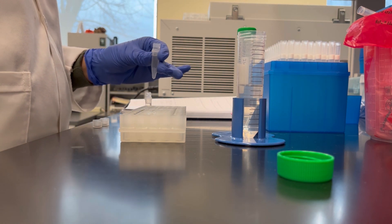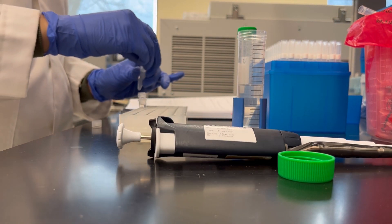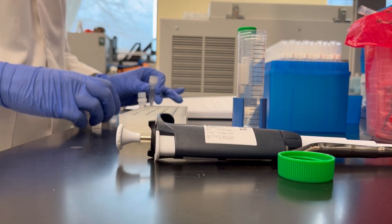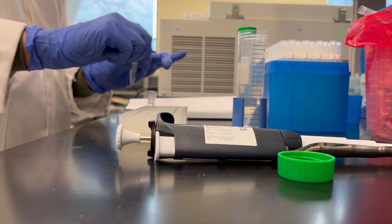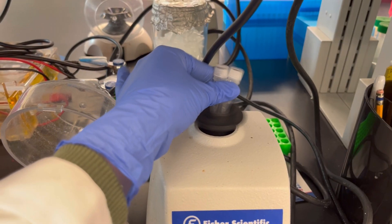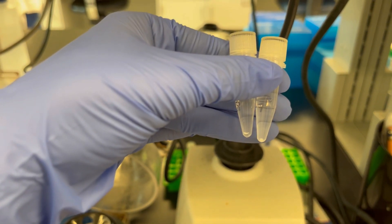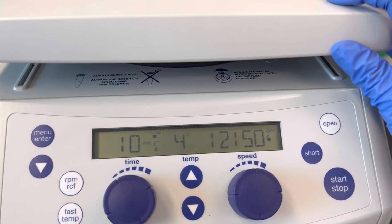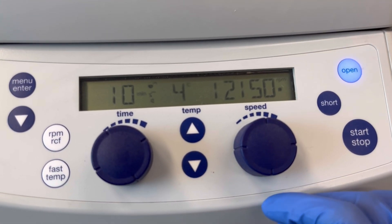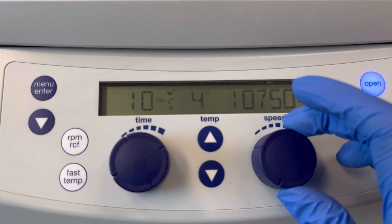For the first wash with 75% ethanol, add 1 ml of ethanol to the RNA. Then vortex it for a little bit. Then centrifuge at a speed of 10,000 rpm for 10 minutes.